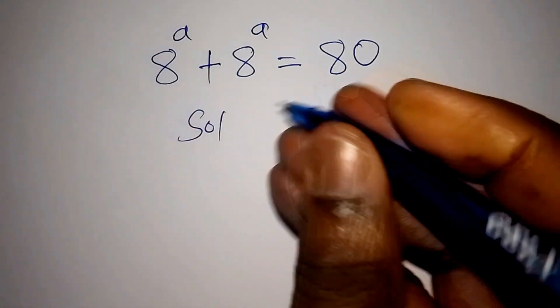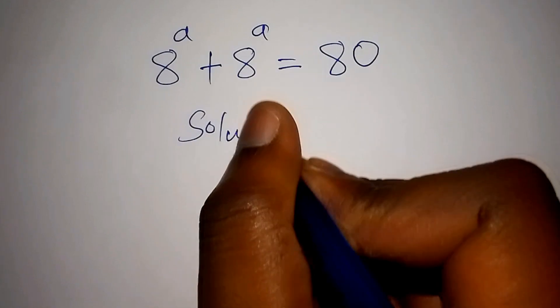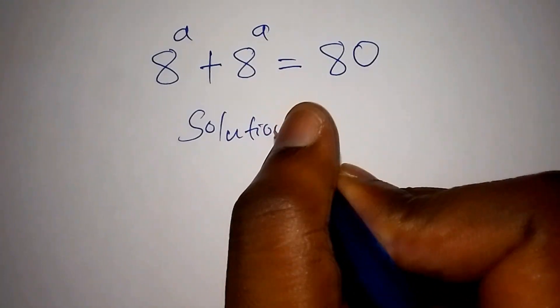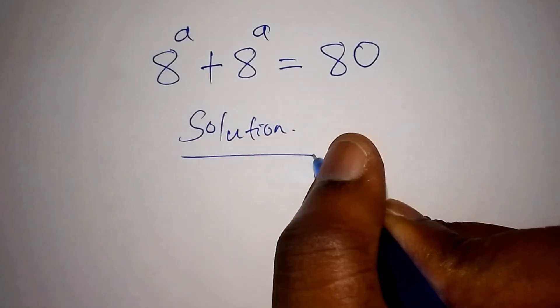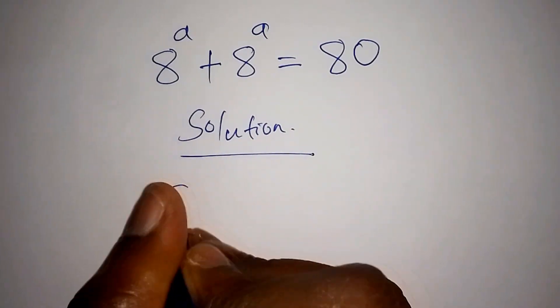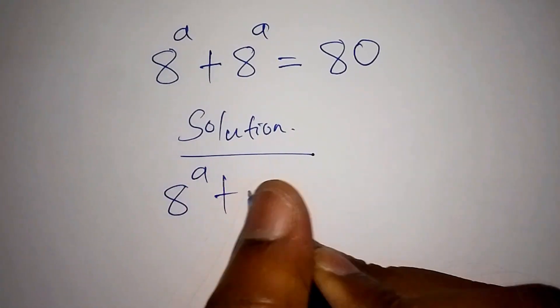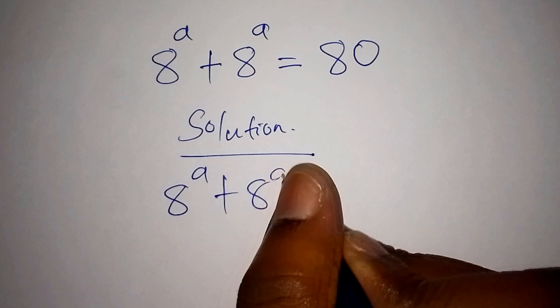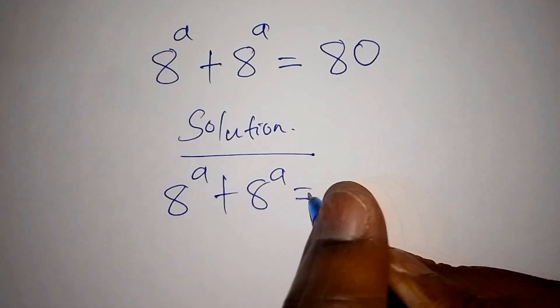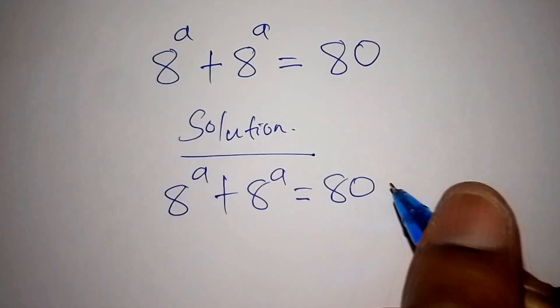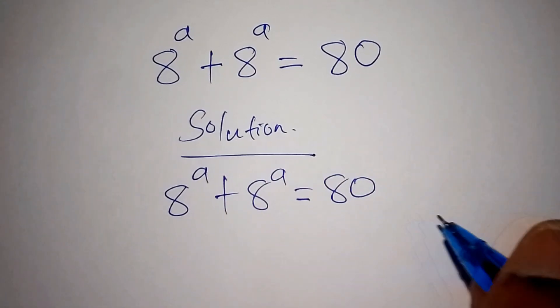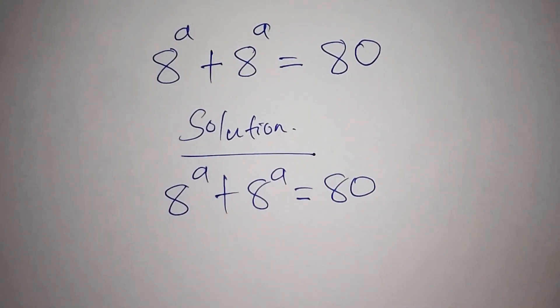So on our solution to this maths problem, this is what we have: 8 to the power of A plus 8 to the power of A is equals to 80. So now, how do you work out the value for A?